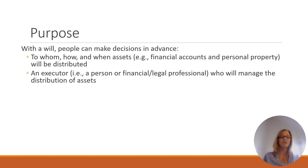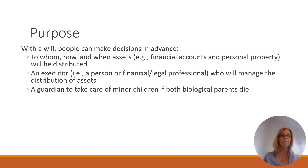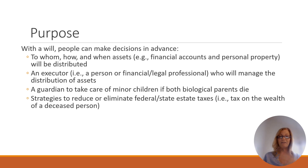A will also lets us name who's going to manage the distribution of the assets, and that's an executor. It doesn't have to be a legal professional — it can be a person. There are some limitations in some states on what you can receive under the will if you're the executor, and we'll talk about that later. You can also appoint a guardian — that's who's going to take care of your minor children if both parents have died.